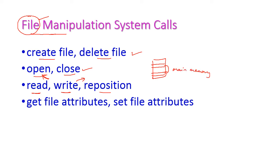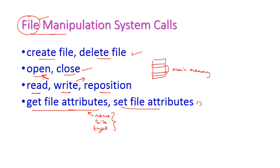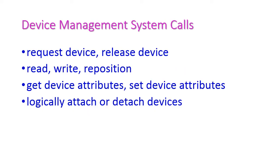Reposition changes the location of the file in main memory. Next is get file attributes — file attributes include the file name, size, and type. We can get the file attributes using get file attribute system call, and we also have set file attribute system call to set the file attributes. These are the system calls that come under file manipulation system calls.